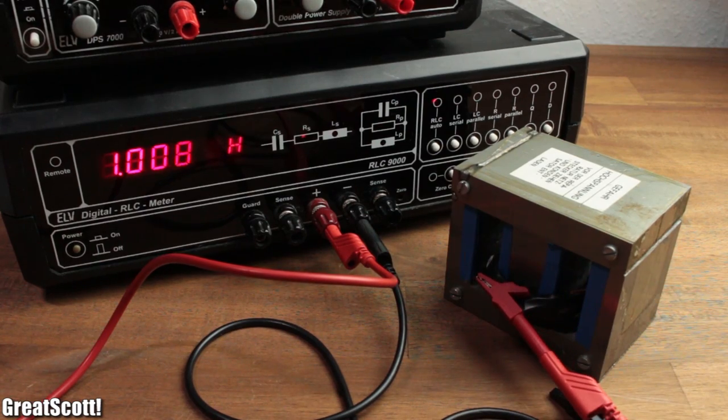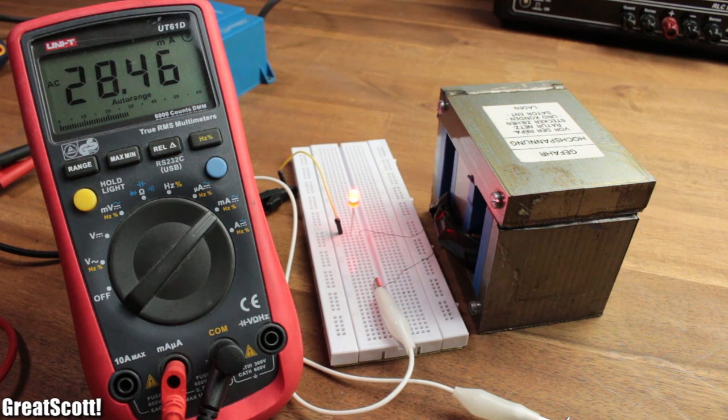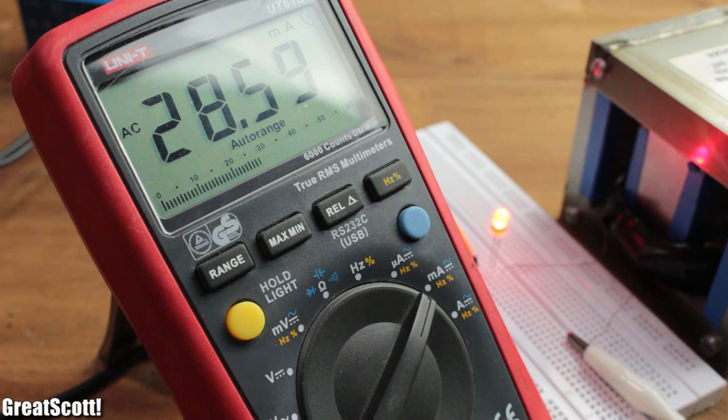Now I connect my 1H coil in series with the LED and it lights up perfectly with an RMS current flow of around 28mA.